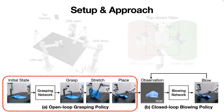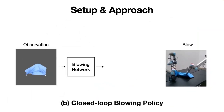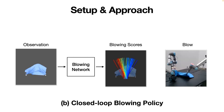We take a learning-based approach. Our method learns to infer where to grasp on the cloth, then two robot arms lift the cloth and stretch it in the middle of the workspace, and the third arm executes the blowing action. The blowing network infers a score for each action candidate, indicating the cloth coverage prediction for each action. The action with the maximum score is selected for execution.